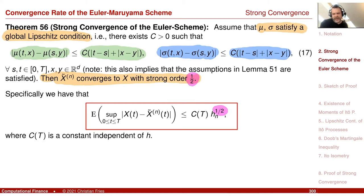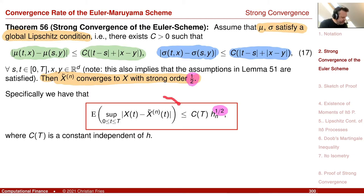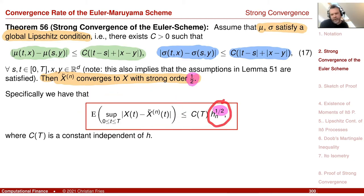The assumption is that the coefficients μ and σ are Lipschitz continuous — they fulfill condition 17, Lipschitz continuity. Under this assumption, we can estimate the error term by the time step size to the power of one half.